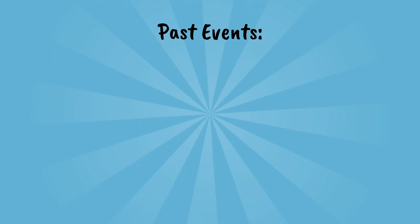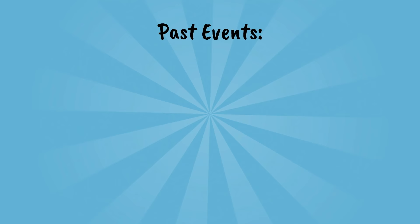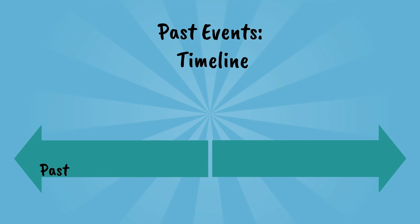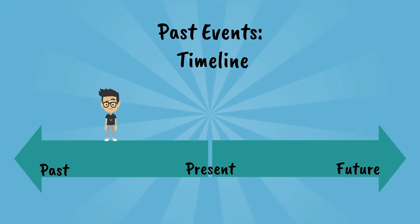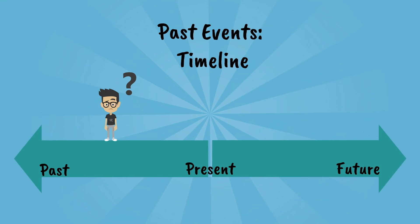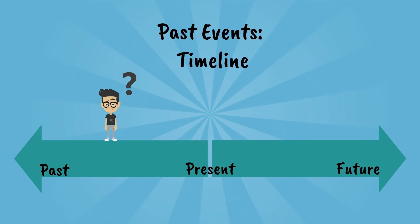The first function is talking about past events. To understand this, let's use a timeline. On the left we have the past, in the middle we have the present, and on the right we have the future. The present perfect simple indicates that something happened in the past, but we don't know when — just sometime between the day you were born until now.